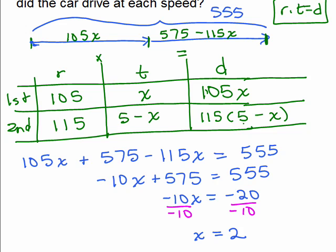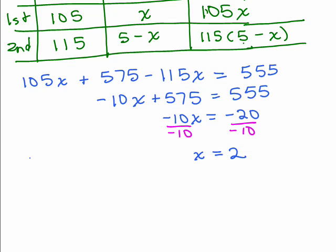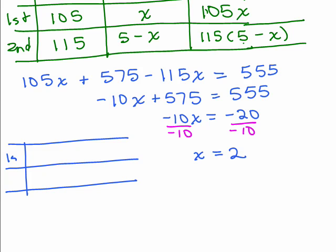All right, not done. So now I need to go back and check it by putting it in a chart. First and second part, the rate is still 105 and 115. Now, the time, I now know x, so it's 2. So if you want 2 hours for the first half, there's 3 left for the other half, which of course is 5 minus 2.